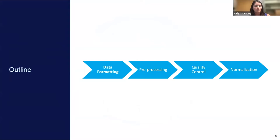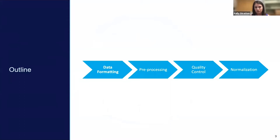This first talk covers data formatting, pre-processing, quality control, filtering, and normalization. For proteomics data we have a choice of whether to start at the peptide level or at the protein level. MaxQuant and other software can provide protein-level data, but if you have protein isoforms you'll need a method that accounts for those. For our purposes, we typically prefer to start at the peptide level for our proteomics analyses.